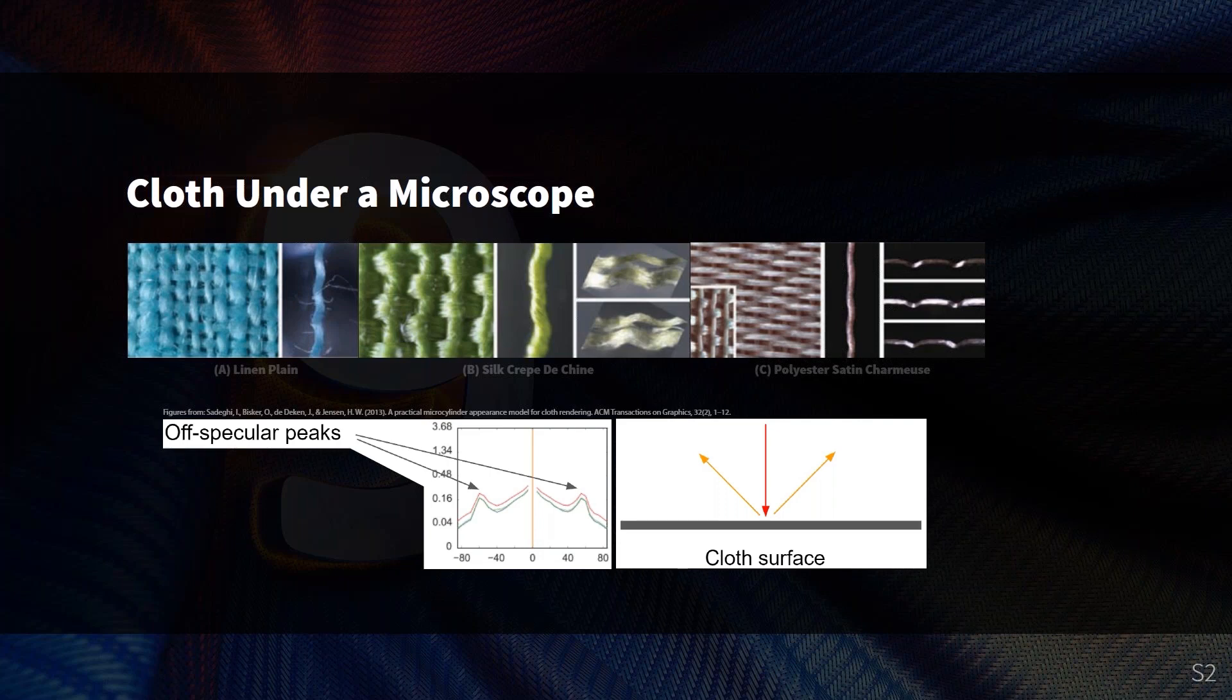This is also quite important for the visual aspects. And finally, as I was alluding to before, the position of the highlights depends a lot on the shape of the yarns and how they enter the weaving pattern. In particular, I have looked a bit closer at the silk.